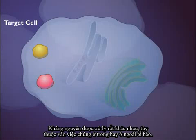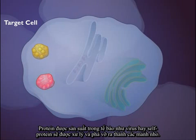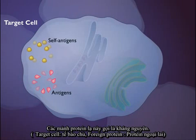Antigens are processed differently depending on whether they originate within or outside the cell. Proteins produced within the cell, such as viruses or self-proteins, are broken down into fragments. Fragments of foreign proteins are antigens.